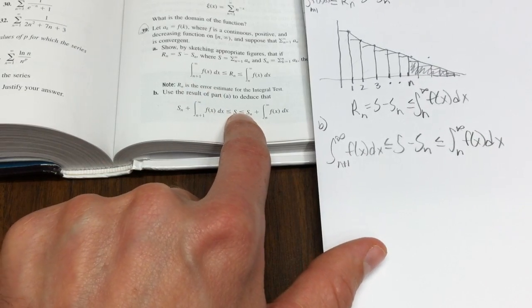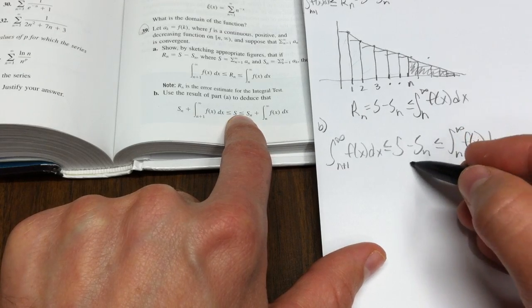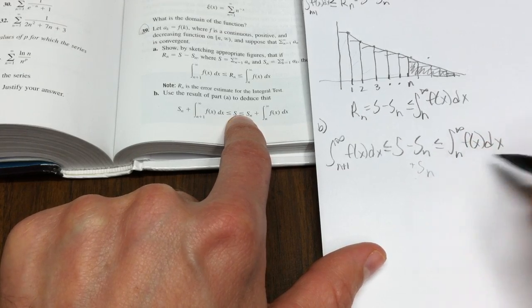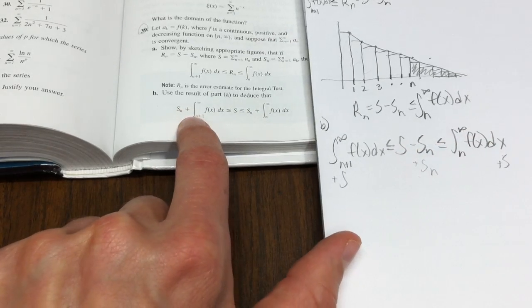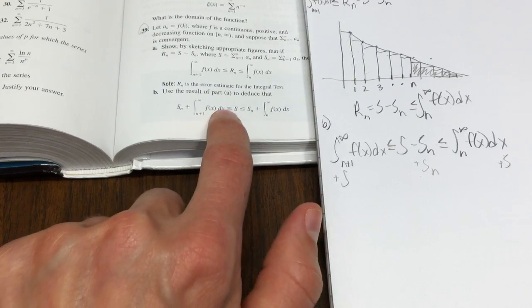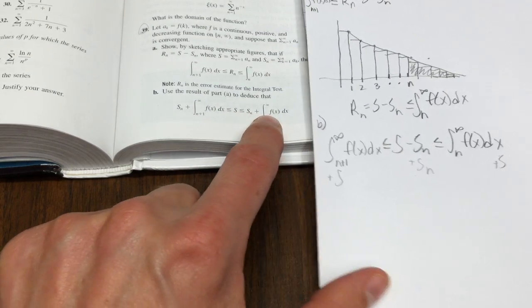Now, what is S stuck between? Well, the series, I guess you could add Sn to all the terms, and you see that we'd have exactly what's over there, Sn plus the first integral is less than or equal to S, less than or equal to the final integral. Hope that helps.